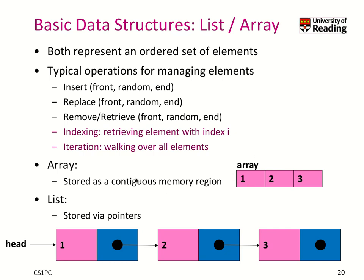In an array, we store it as a contiguous memory region, which we know about, and the list implementation stores the same data but using pointers. The idea is those elements can be stored somewhere in main memory. How we find where the next element is, we use a pointer from the first element to the second element, and from the second to the third.